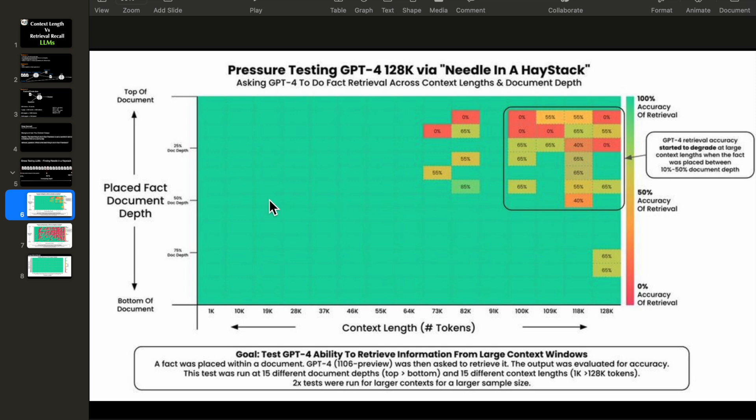Now some interesting observations. So what's happening is whenever we have a smaller context length, now this is for a GPT-4 model, which has a maximum token length of 128k. So up to about 64,000 tokens, no matter where in the context the needle is, we are able to retrieve it accurately.